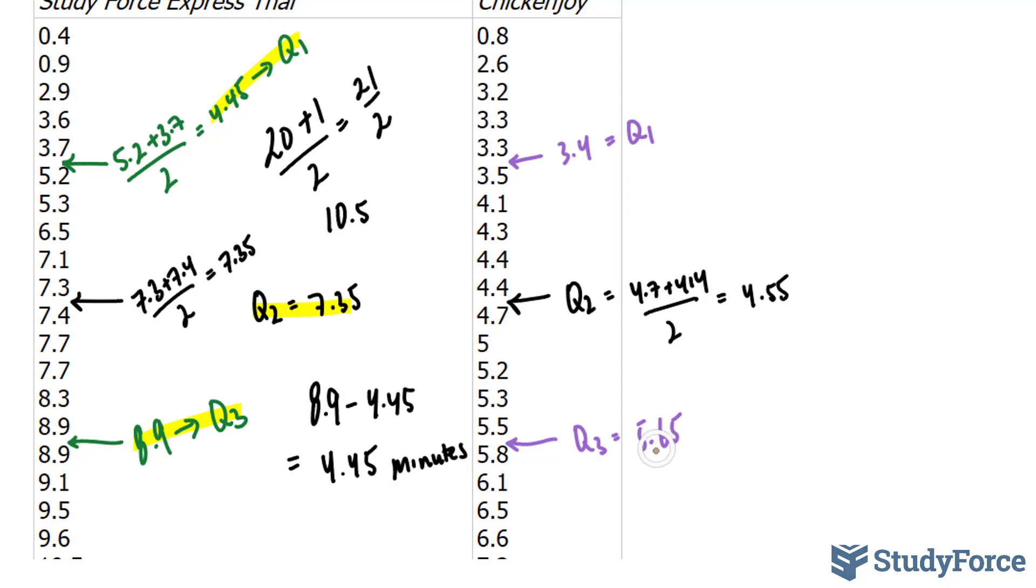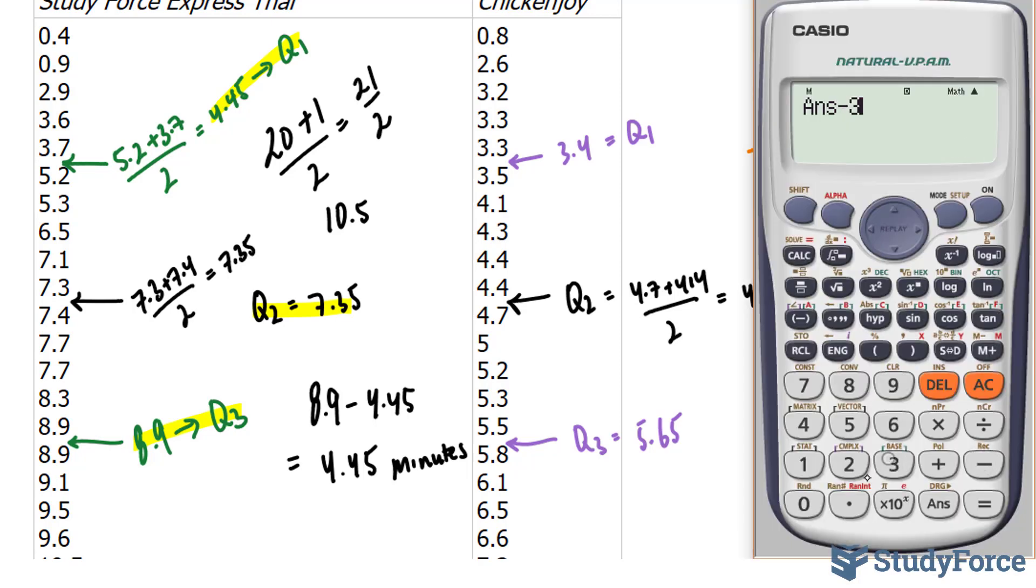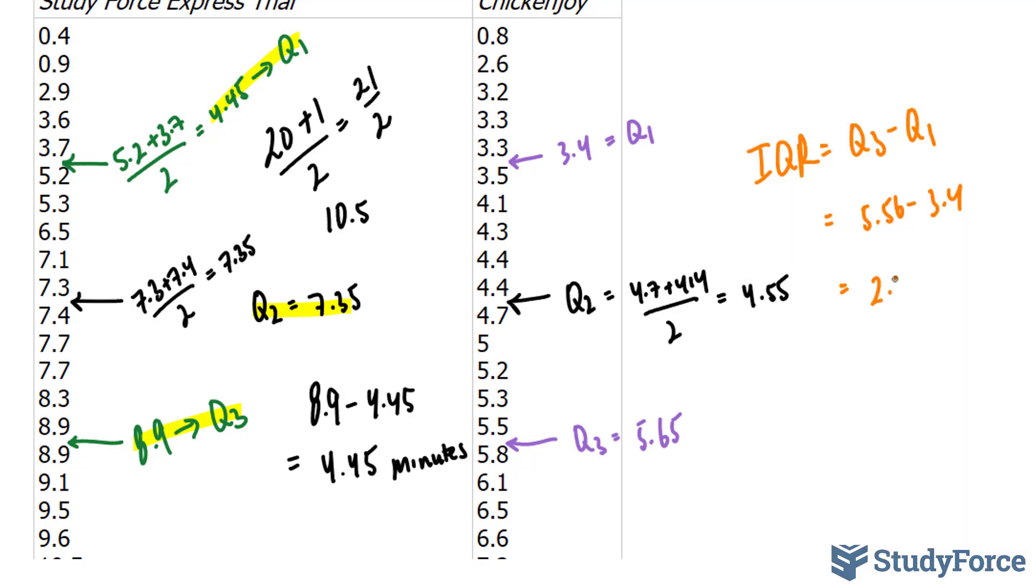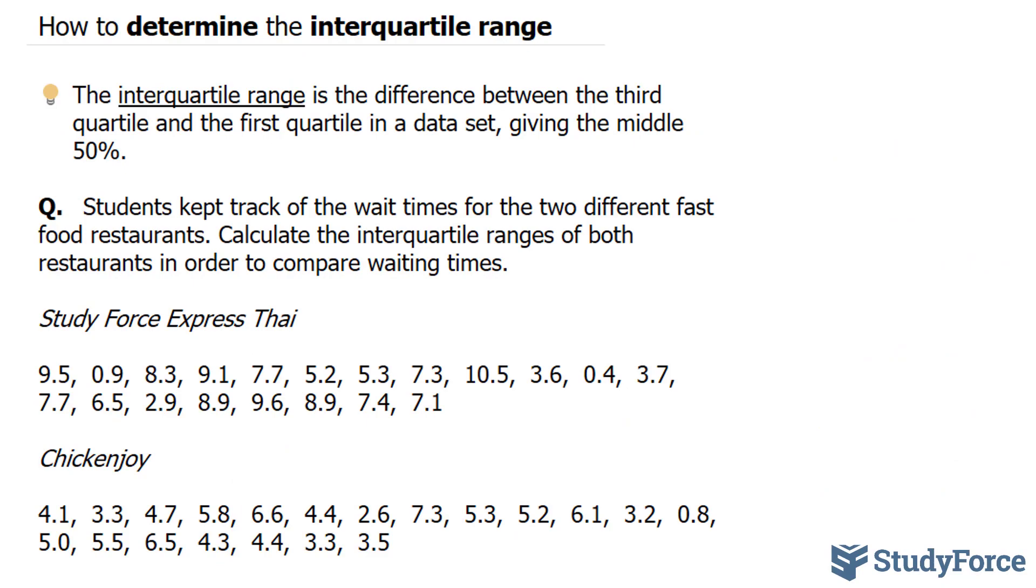All we have to do now is subtract Q3 from Q1. Our interquartile range is Q3 minus Q1, 5.56 minus 3.4. Subtracting these, we end up with 2.25 minutes. Therefore, this restaurant has a shorter waiting time than the first one. And so there you have it. That is how to determine the interquartile range.